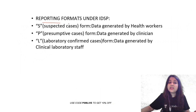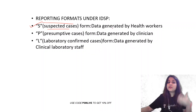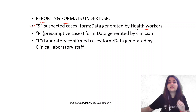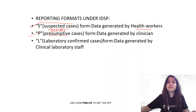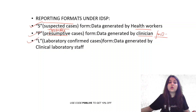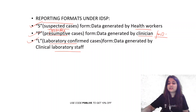So there are three reporting formats. S is filled for suspected cases — the form is filled by the health workers and paramedical workers. P is for presumptive or probable cases — the data is generated by clinicians or medical officers. And L is the lab confirmed case — the data here is generated by the clinical laboratory staff.